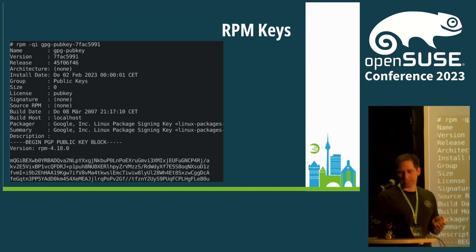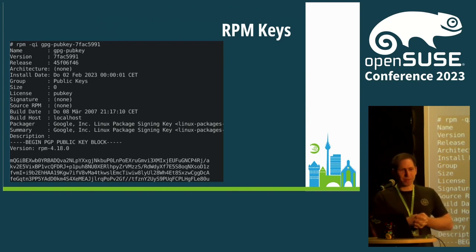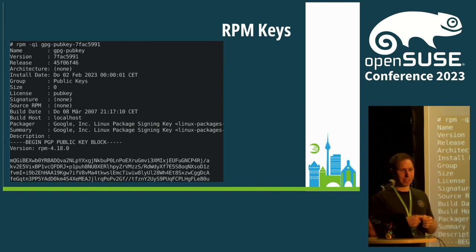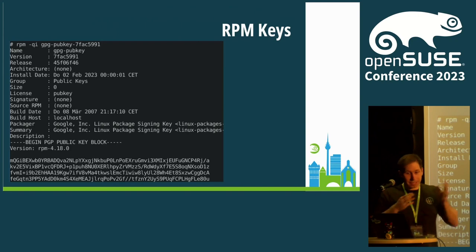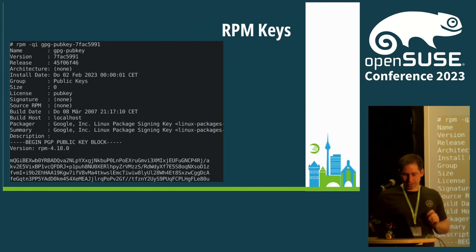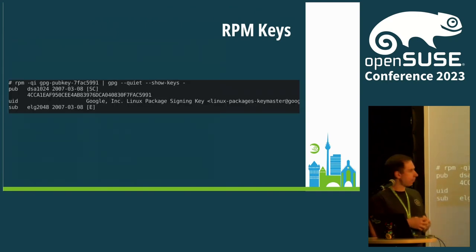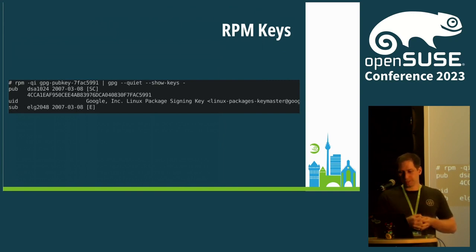RPM displays some GPG key that is somehow mangled into the view of an RPM. So you see the package name is actually the equivalent of a common name of a GPG key, and the description is the PEM of the actual key. We query some package name and we get a key. Here you can see it's just some GPG key — in this case, it's the Google Chrome signing key for the Google Chrome repo.